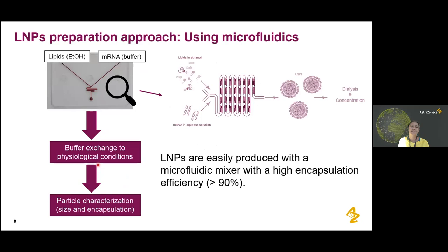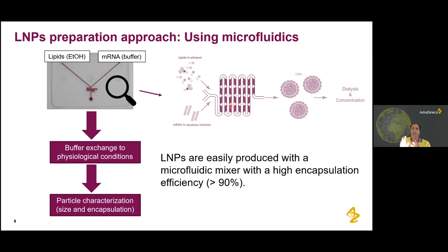How do we prepare LNPs? The most commonly reported method in literature is the use of microfluidics. The lipids, which are not water soluble, are in an ethanol phase; the mRNA, which is not ethanol soluble, is in an aqueous phase at typically low pH. We mix these in a microfluidic chamber — in our case a system called a NanoAssembler from Precision Nanosystems, which uses a mixed herringbone structure to create chaotic flow, helping to prepare samples consistently and with small size. We typically get very reproducible results with encapsulation efficiency greater than 90%.